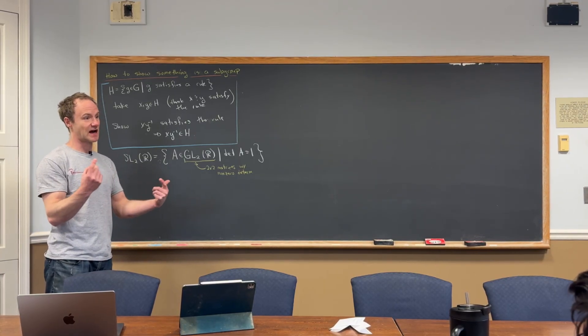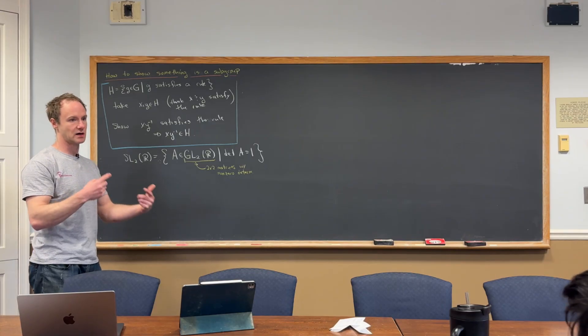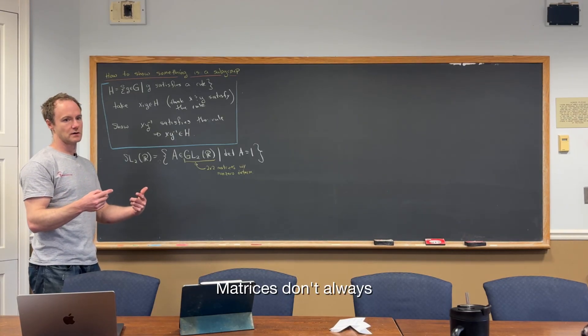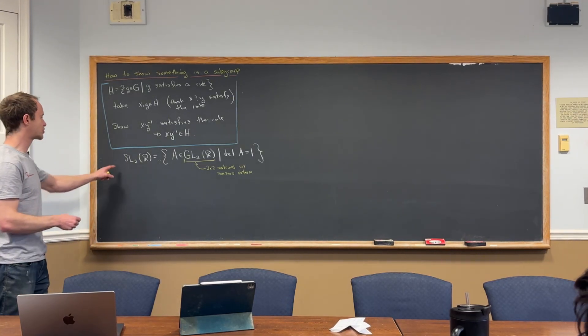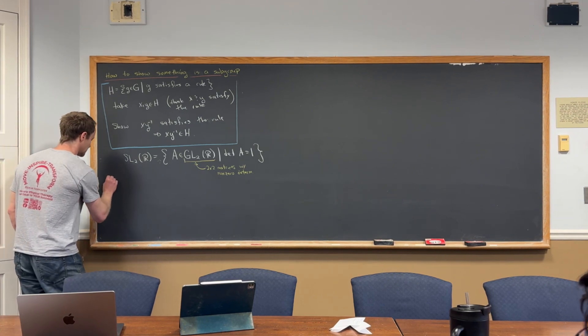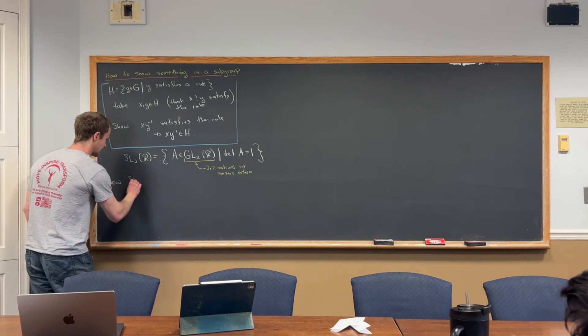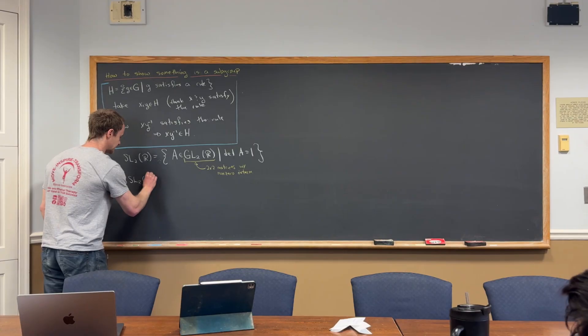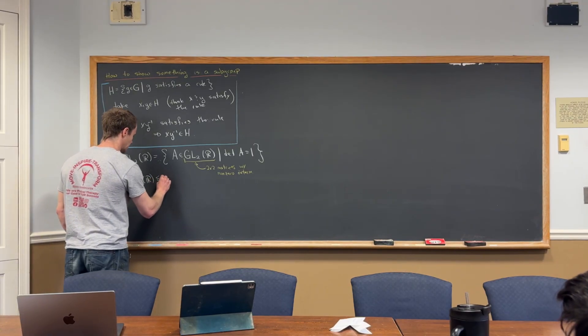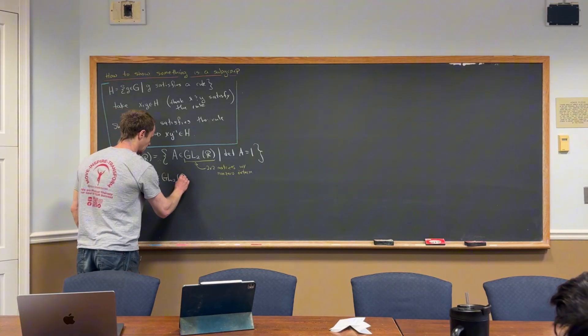Of course, it's not an abelian group because we know matrices don't always commute. So now we want to show that this is a subgroup. Let's say we want to show that SL(2,R) is in fact a subgroup of GL(2,R).